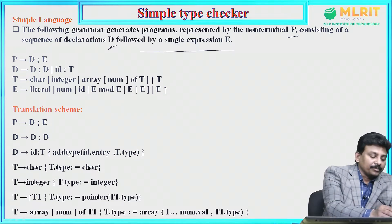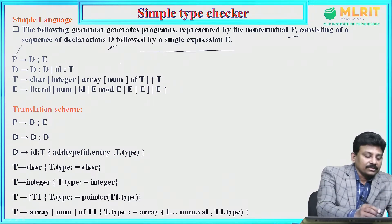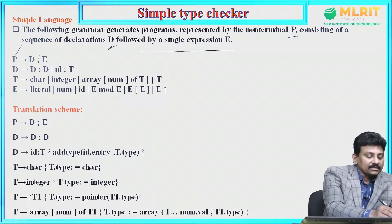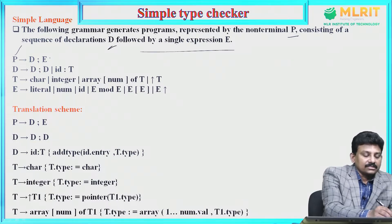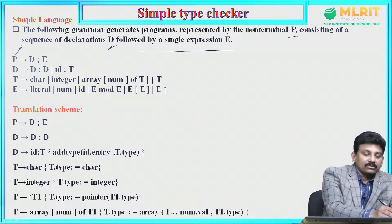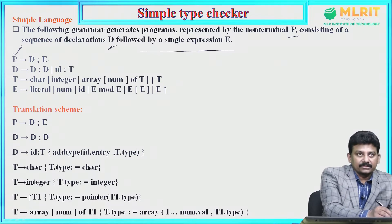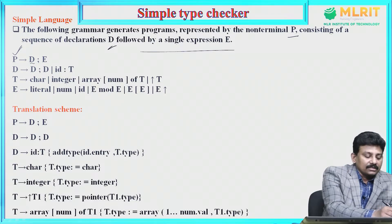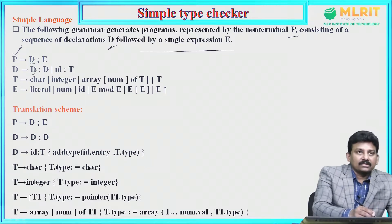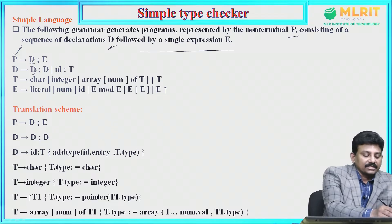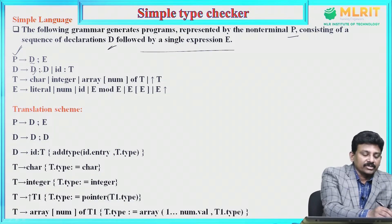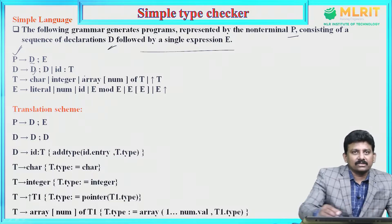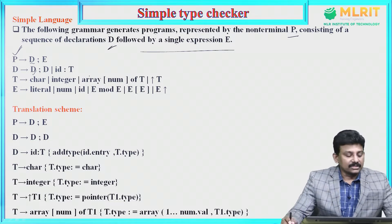Here, P represents a program. P derives D semicolon E. Program will contain declarations followed by a semicolon, followed by an expression. D derives another declaration — D represents declaration. D derives D semicolon another declaration, so that we can declare any number of variables in a sequence.